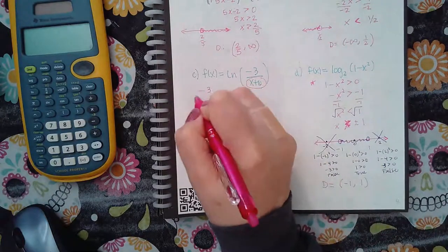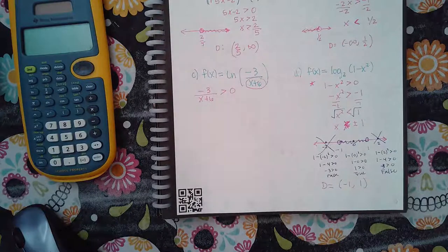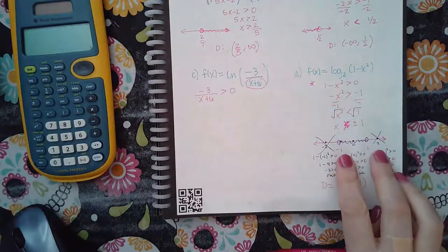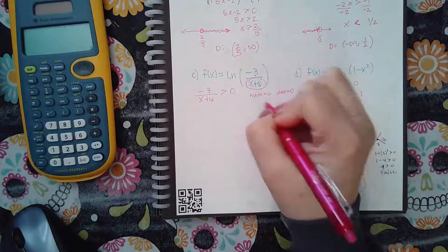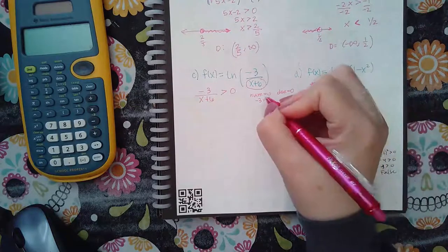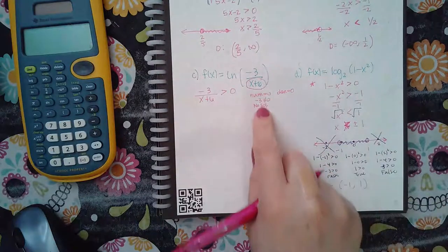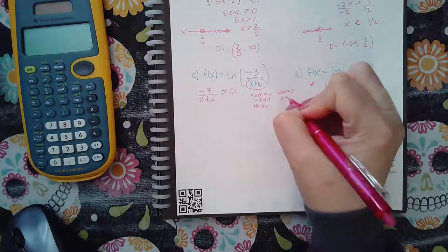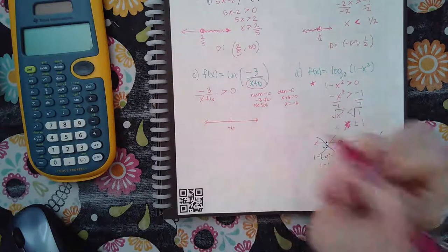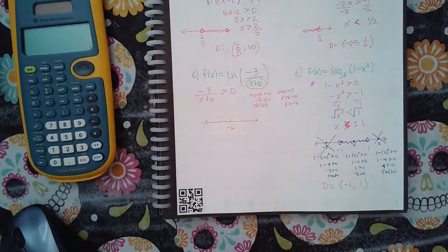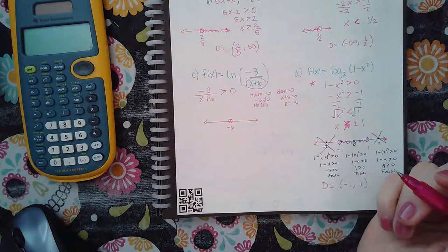For the fraction problem, we need the whole argument greater than zero. For a fractional inequality you find your critical numbers by setting the numerator equal to zero and the denominator equal to zero. The numerator is negative three, which never equals zero, so no solutions there. Setting the denominator equal to zero gives x equals negative six, which is our only number on the number line — marked as an open dot because there's no equal sign.